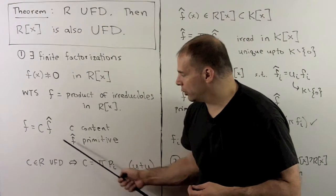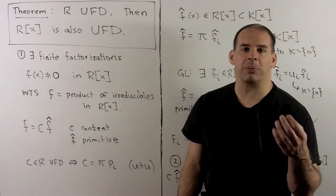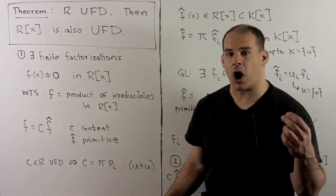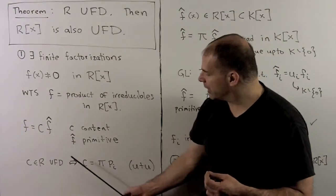Now, c lives in R, which is a UFD. So I can factor c as a finite product of irreducibles in R. This will be unique up to a unit.